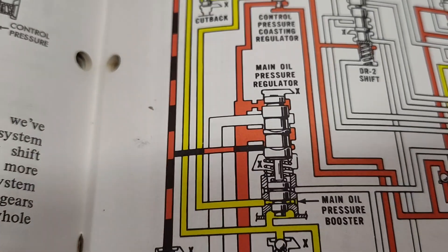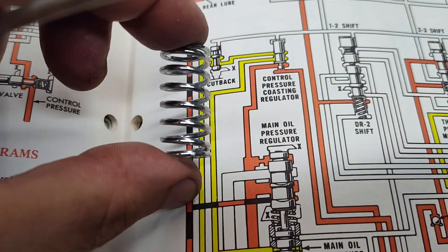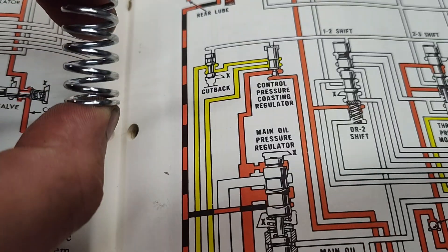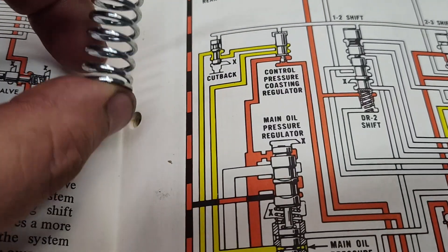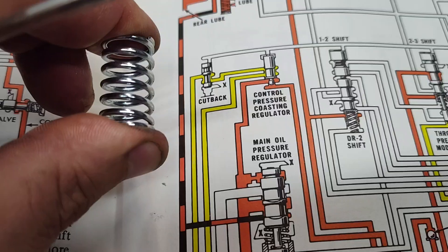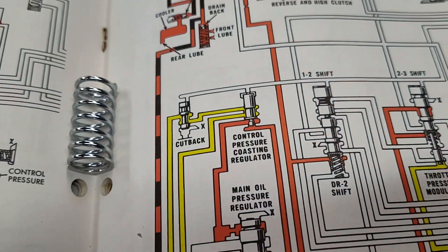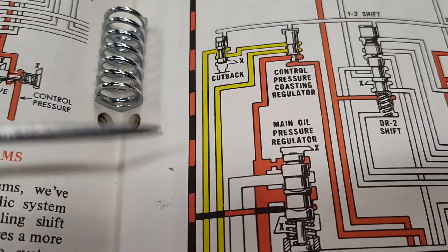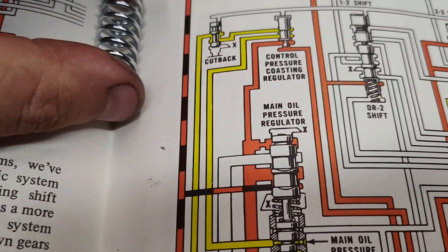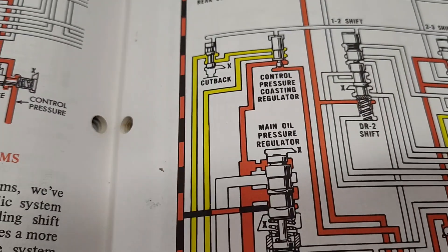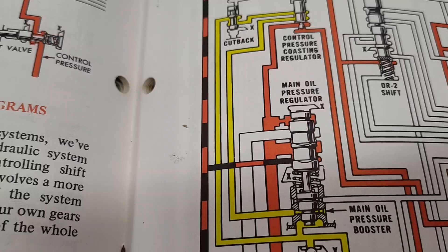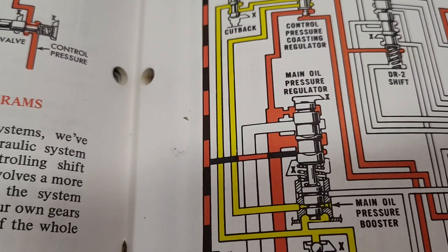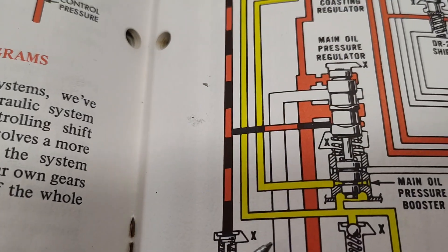So what's happening is we're compressing this very heavy spring. As the valve travels, it's changing the spring rate. Obviously the more you compress this spring, the more resistance it has against the valve. Of course the lighter spring does that too, so you definitely get some variation with the factory setup.